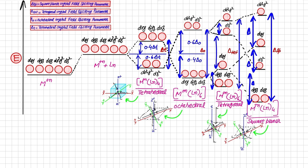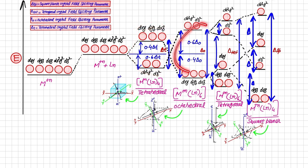In octahedral geometry, dx²-y² and dz² are the axis orbitals and go high in energy because ligands approach along the axes, causing more repulsion. Whereas dxy, dyz, and dxz lie between the axes and feel less repulsion, going low in energy. The octahedral crystal field splitting is not only inverted relative to tetrahedral, but is also greater in magnitude than Δt.